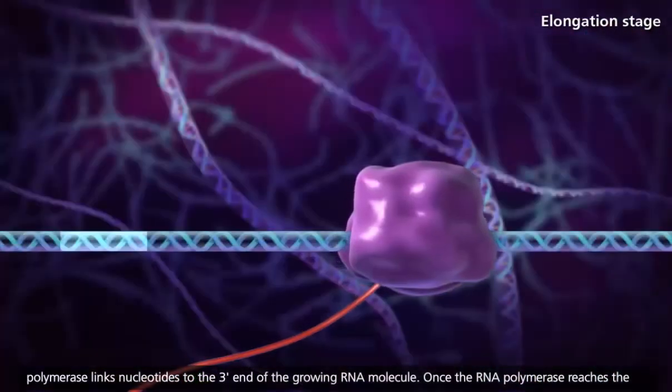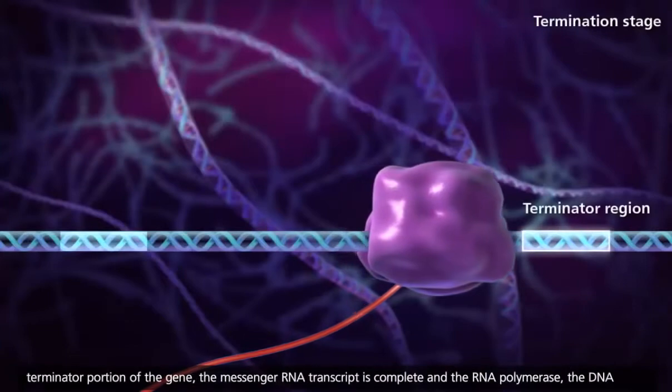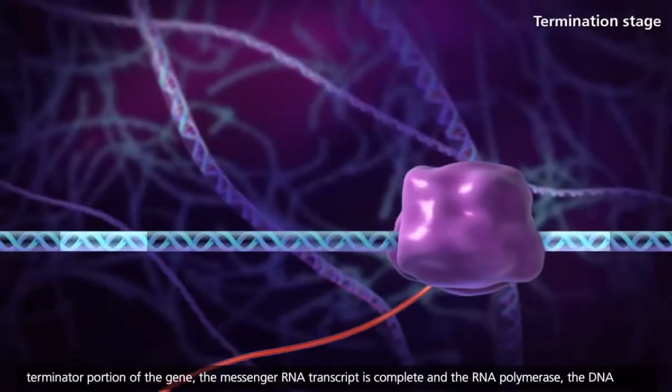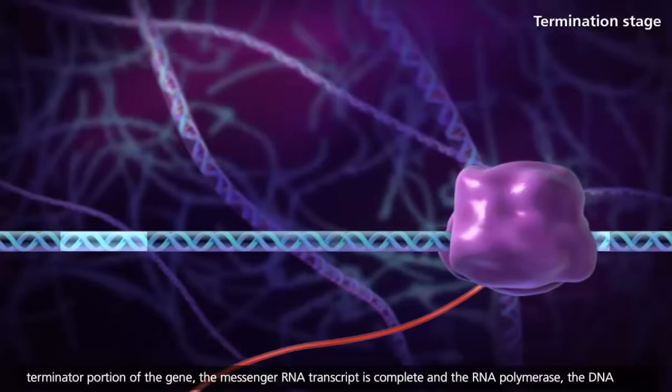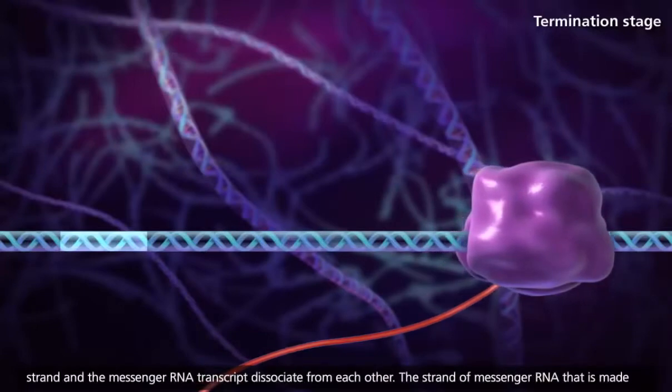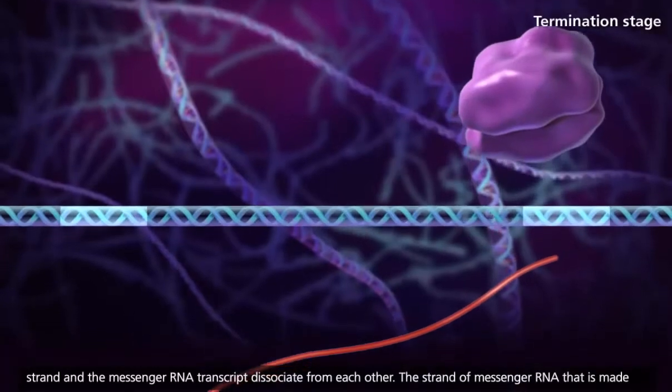Once the RNA polymerase reaches the terminator portion of the gene, the messenger RNA transcript is complete, and the RNA polymerase, the DNA strand, and the messenger RNA transcript dissociate from each other.